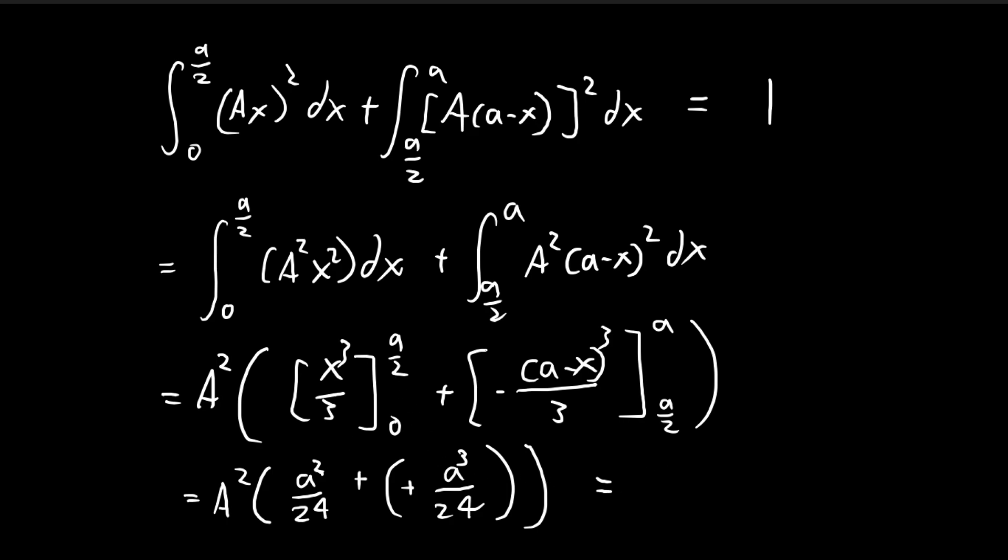So this is to the power of 3. So all you get is a to the power of 3 divided by 12 times A squared is equal to 1. So we can conclude that A is going to be equal to the square root of 12 over a to the power of 3.